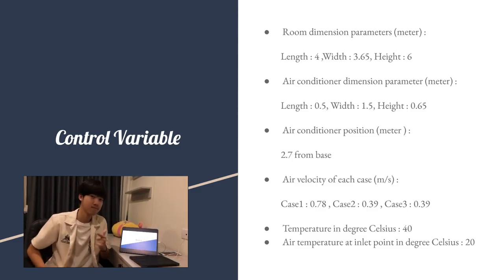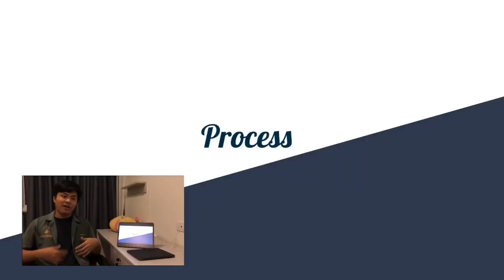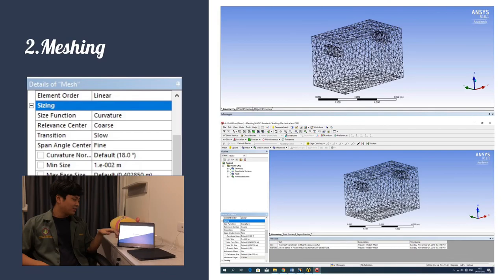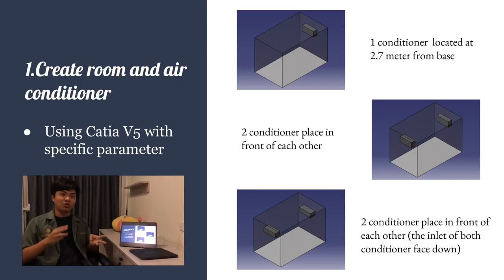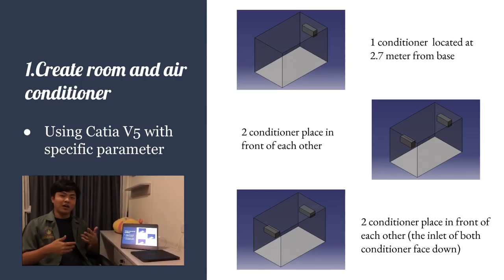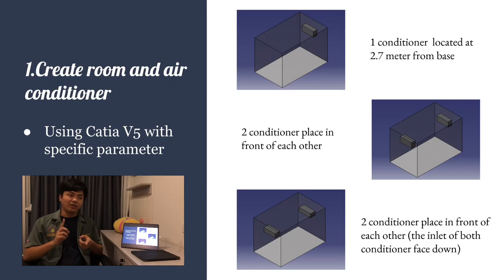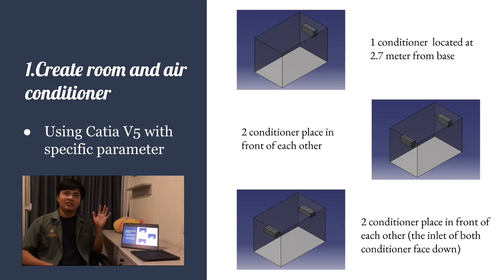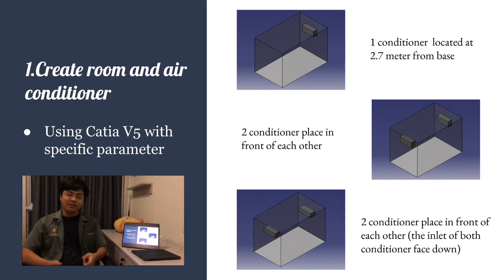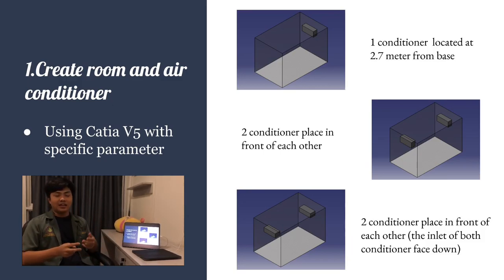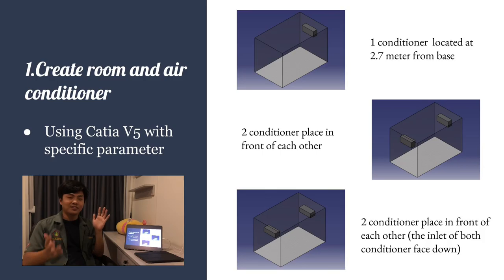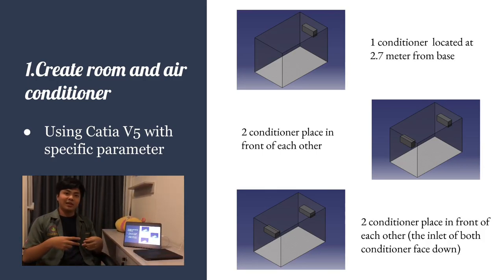For our process, we first created three rooms using CATIA V5 with the parameters stated. The first room has one air conditioner with 0.79 m/s airspeed attached to one side of the wall. The second room has two air conditioners attached on both sides of the wall, not facing each other. The third room is similar to the second but with airflow directed toward the floor.